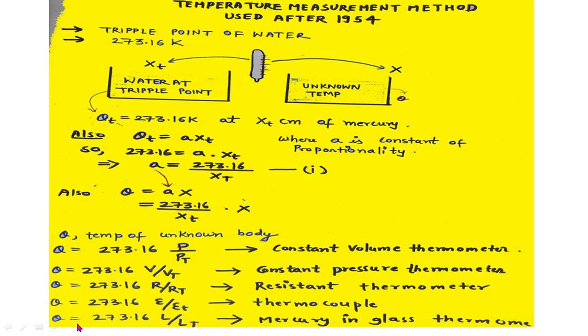Using these relations, we can see that all the expressions are derived for various kinds of thermometers. This relation theta equals 273.16 times (thermometric property / property at triple point) is very important and applies to all thermometer types. That was all for today's topic.